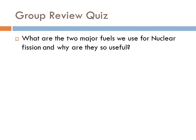Just a quick review — you need to know which two fuels are most commonly used in nuclear power plants. Those fuels are uranium-235 and plutonium-239. You should write that down if you don't have it written down somewhere.